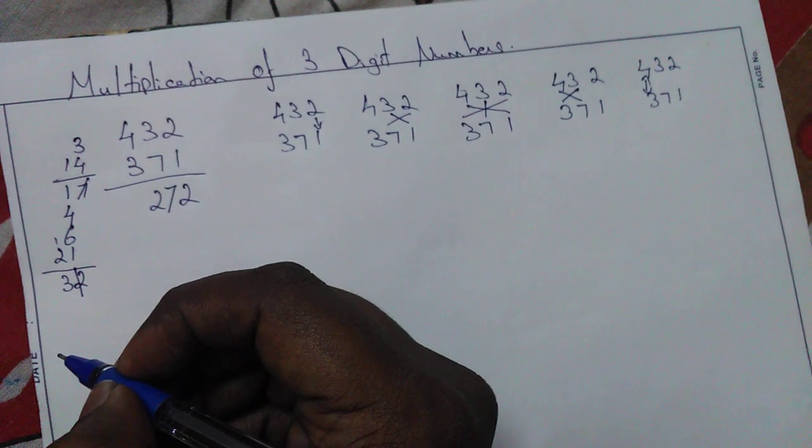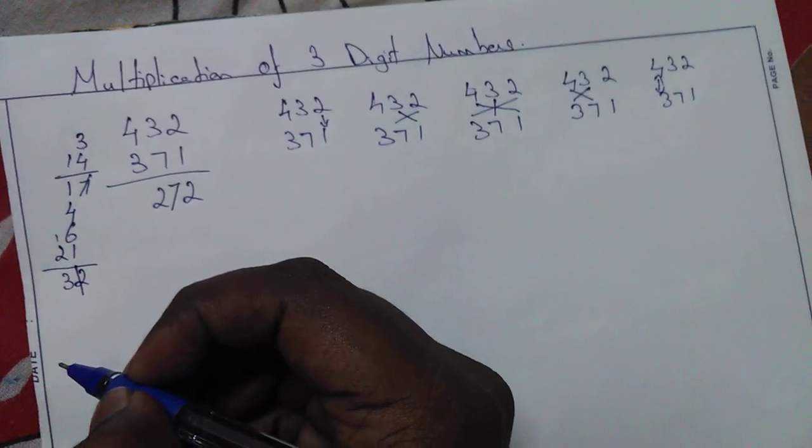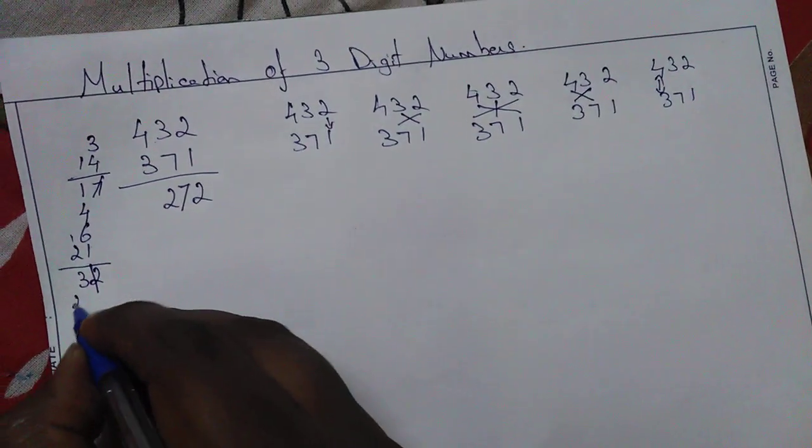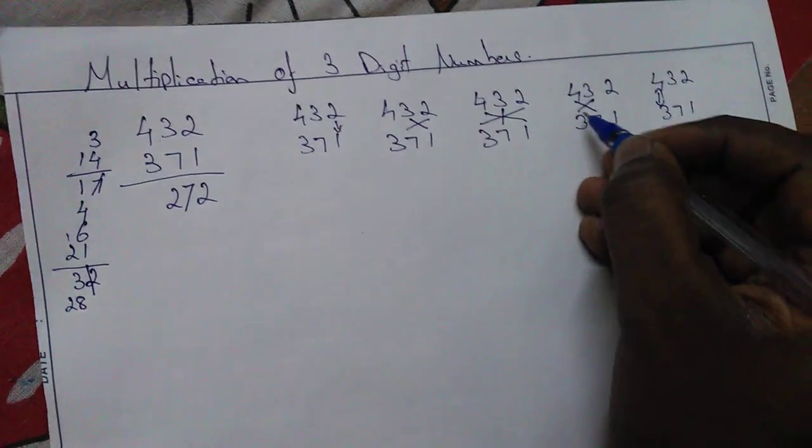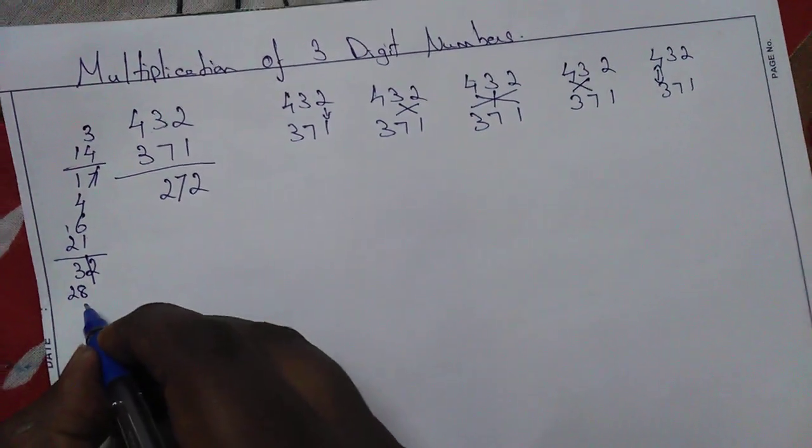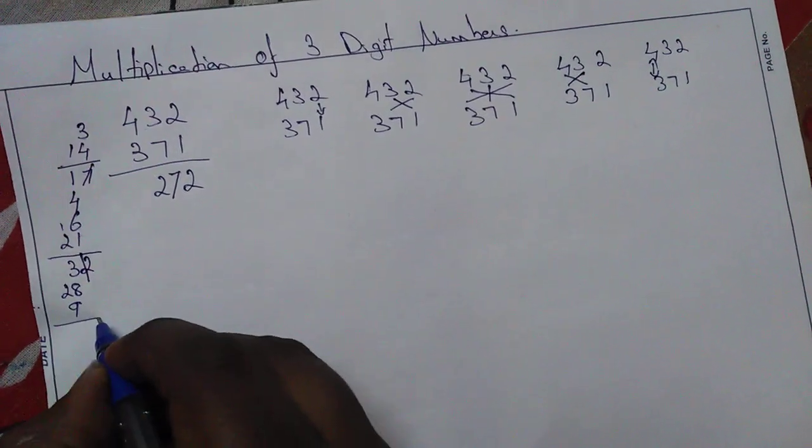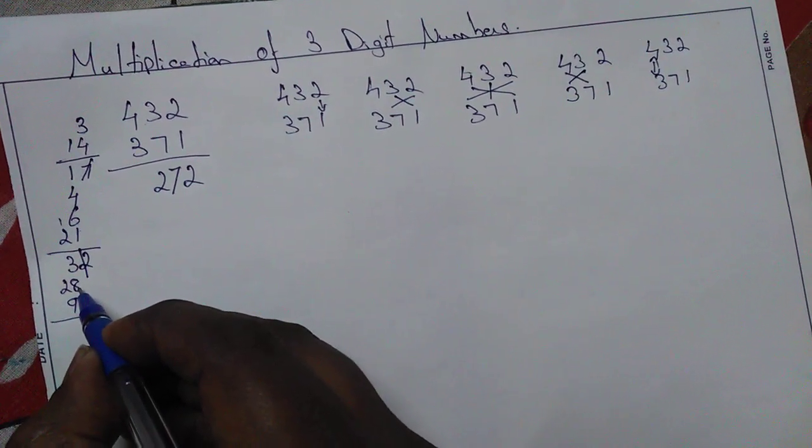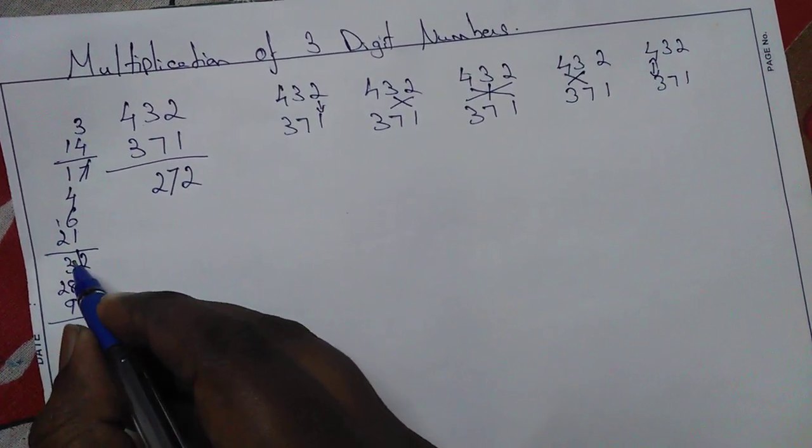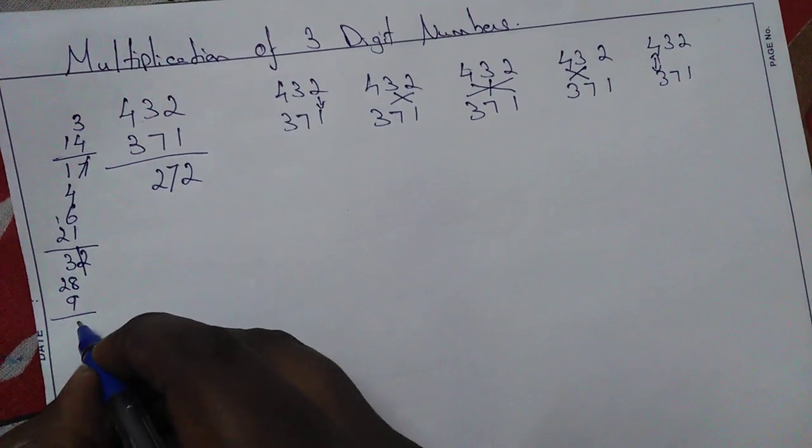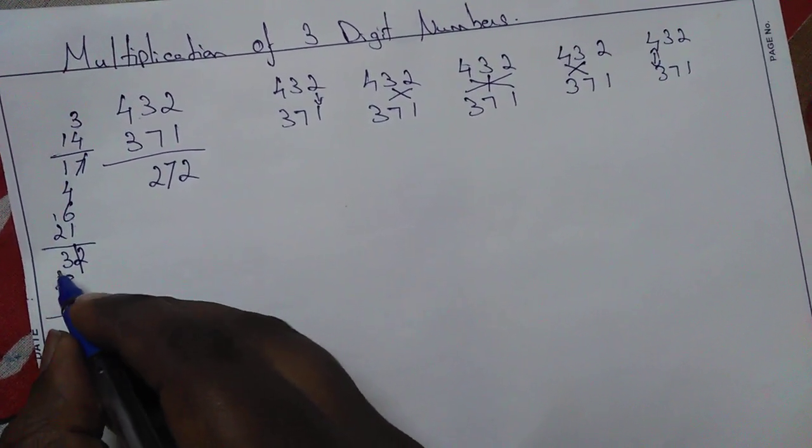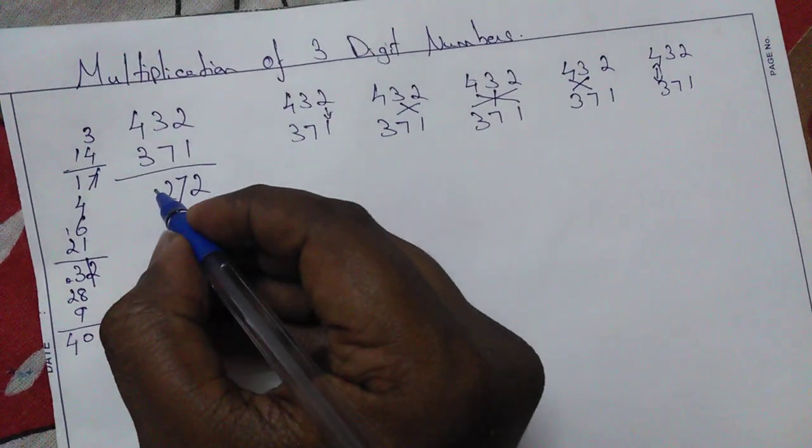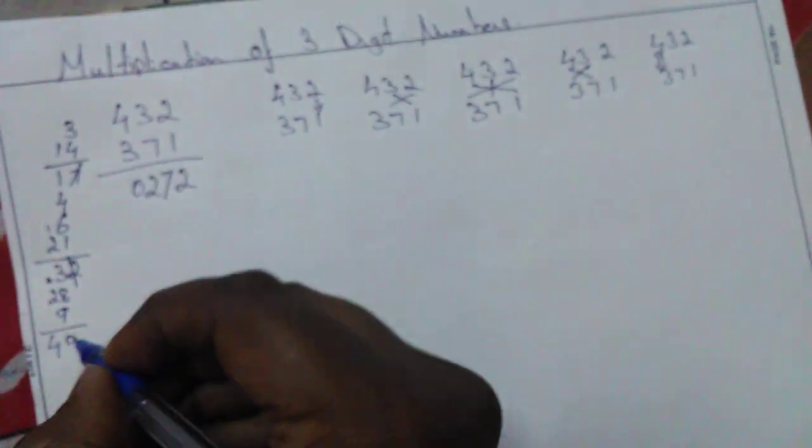Now we have the fourth step. 7 into 4 is 28. 3 into 3 is 9. Let's add: 9, 8, 17, plus 2 is 24. We have 40. Let's put 0 here, 4 is the remainder.